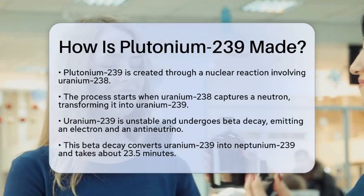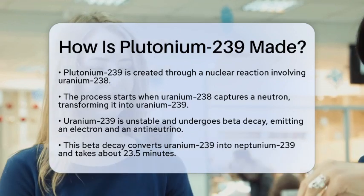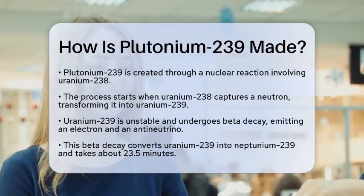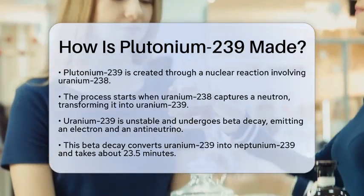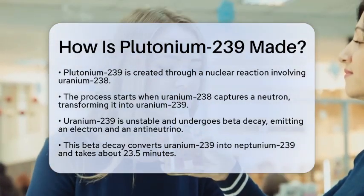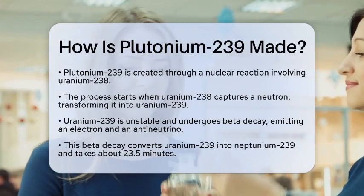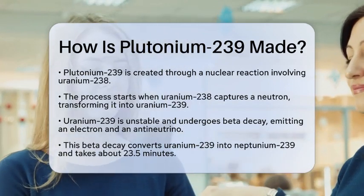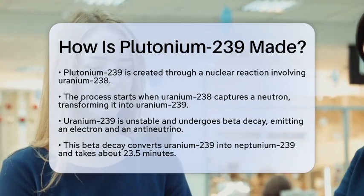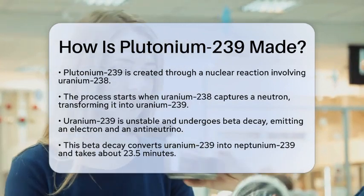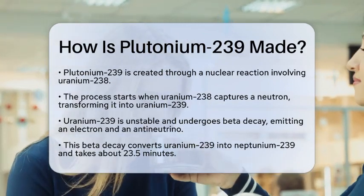The journey begins when Uranium-238 captures a neutron. This absorption transforms Uranium-238 into Uranium-239.